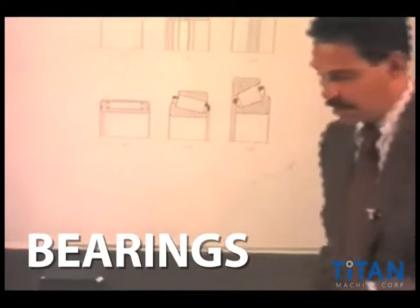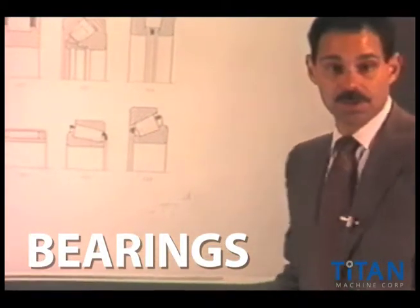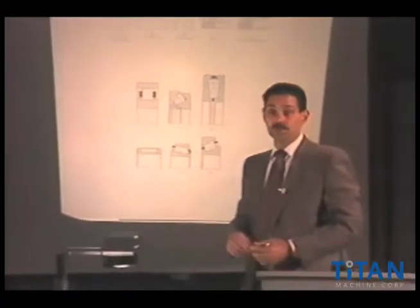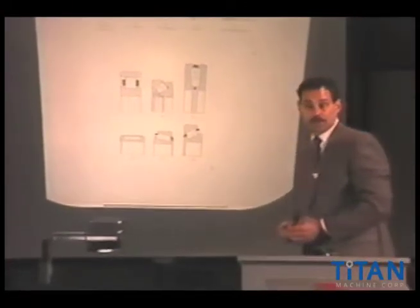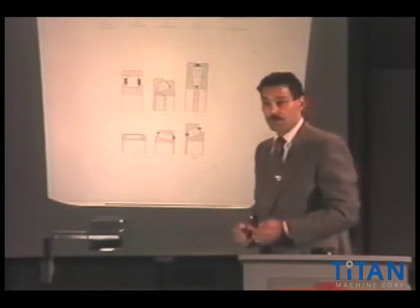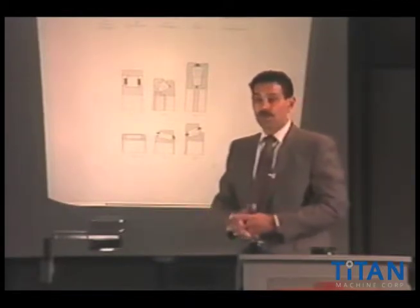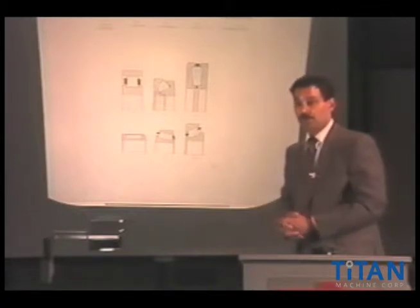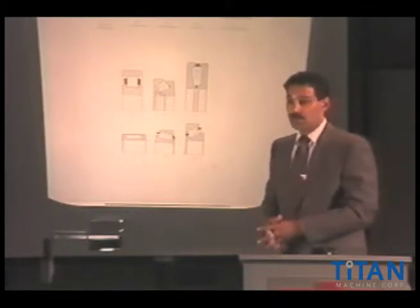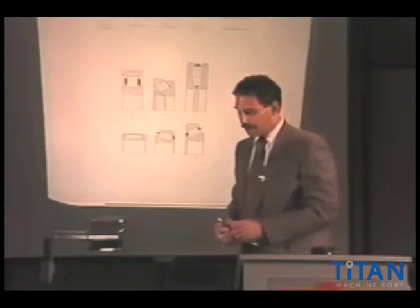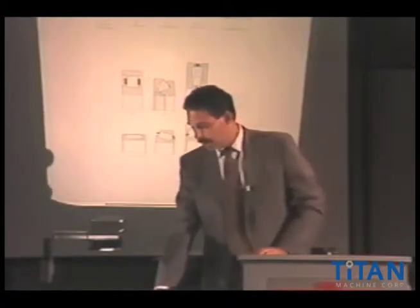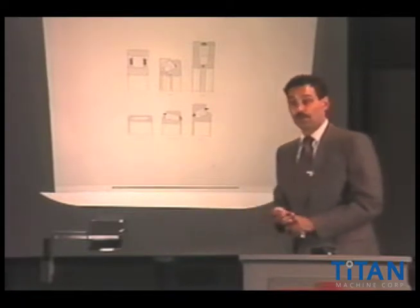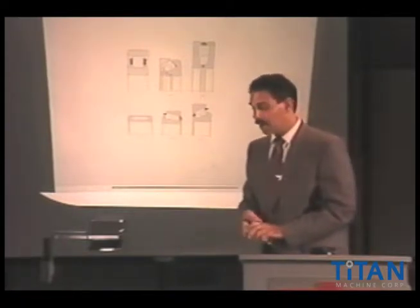In modern machines, there are all different types of applications for bearings. We usually see a mixture of ball and roller bearings, whereas bearings used many years ago were more of the sleeve-type, babbitted materials, bronze materials, or even cast iron. But most of our focus in this industry is the ball bearing, roller bearing, taper roller bearing, and spherical bearing.